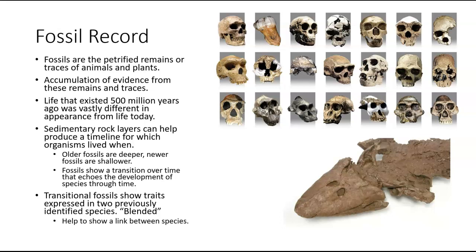The fossil record is one of the biggest pieces of evidence to support the theory of evolution because it literally is a record of the organisms that were on the planet. Due to dating, you can actually be fairly successful in putting together a timeline of not only what species looked like and what traits they had, but also which species were around at the same time. In the case of hominoid evolution, we can see the small changes that happened over time and put them in chronological order to have a pretty substantial timeline. Fossils are the petrified or hardened remains or traces of animals and plants.